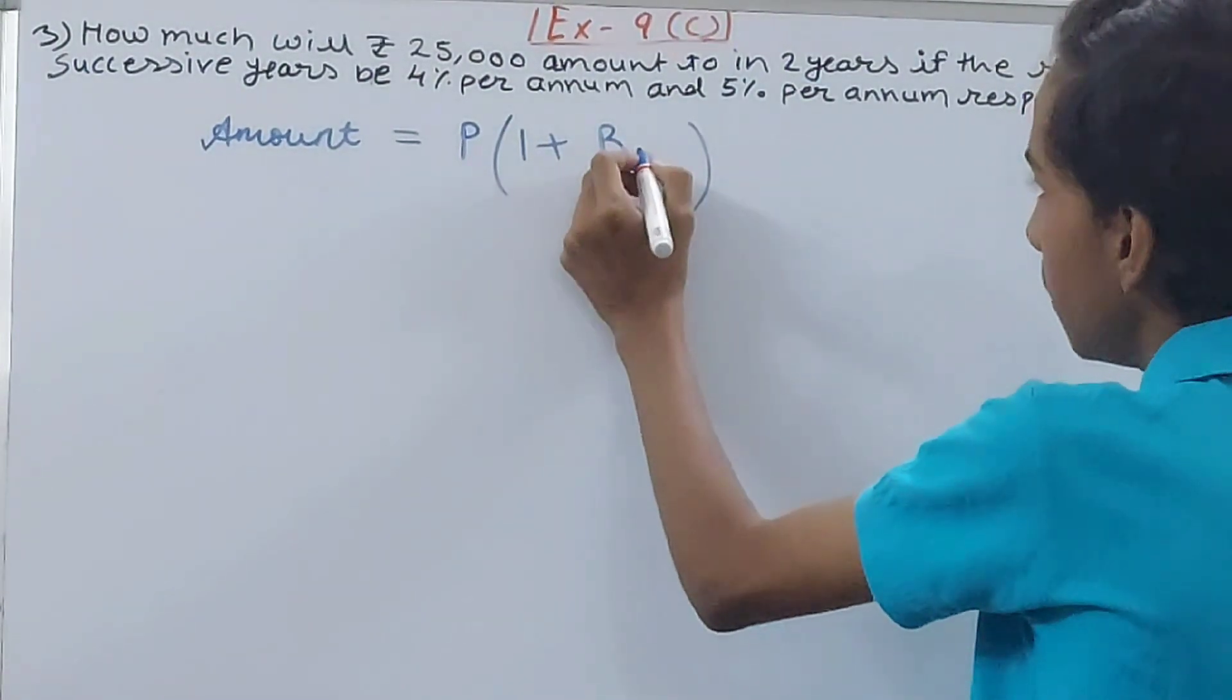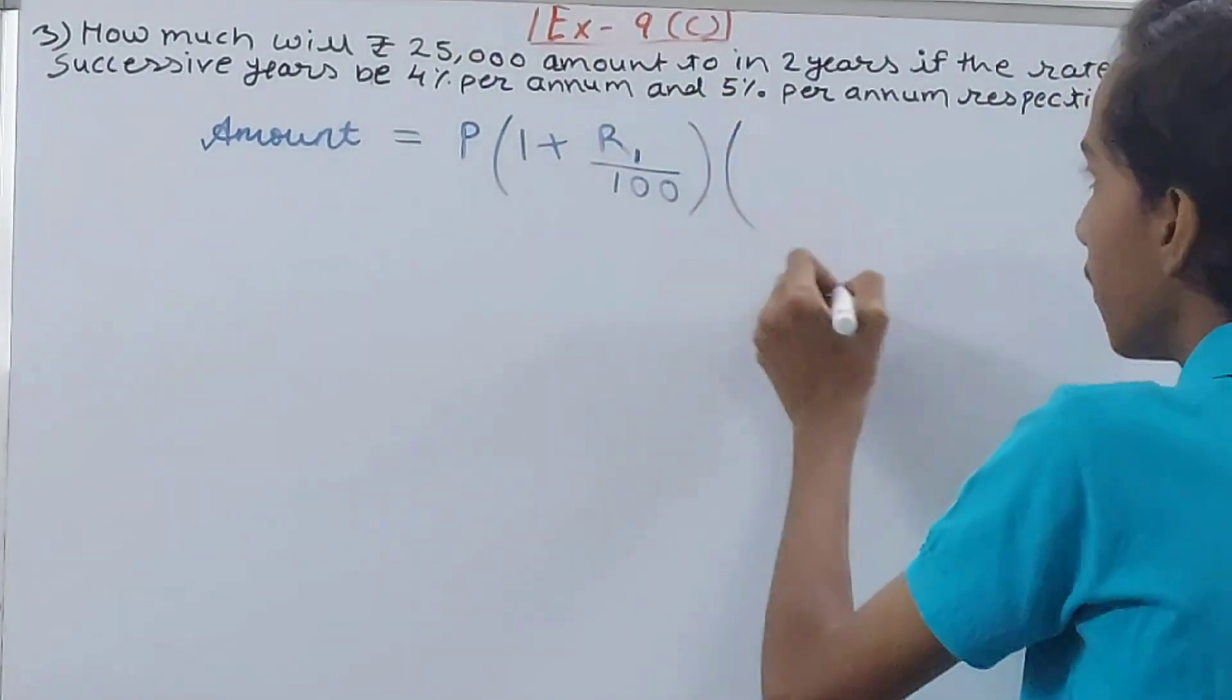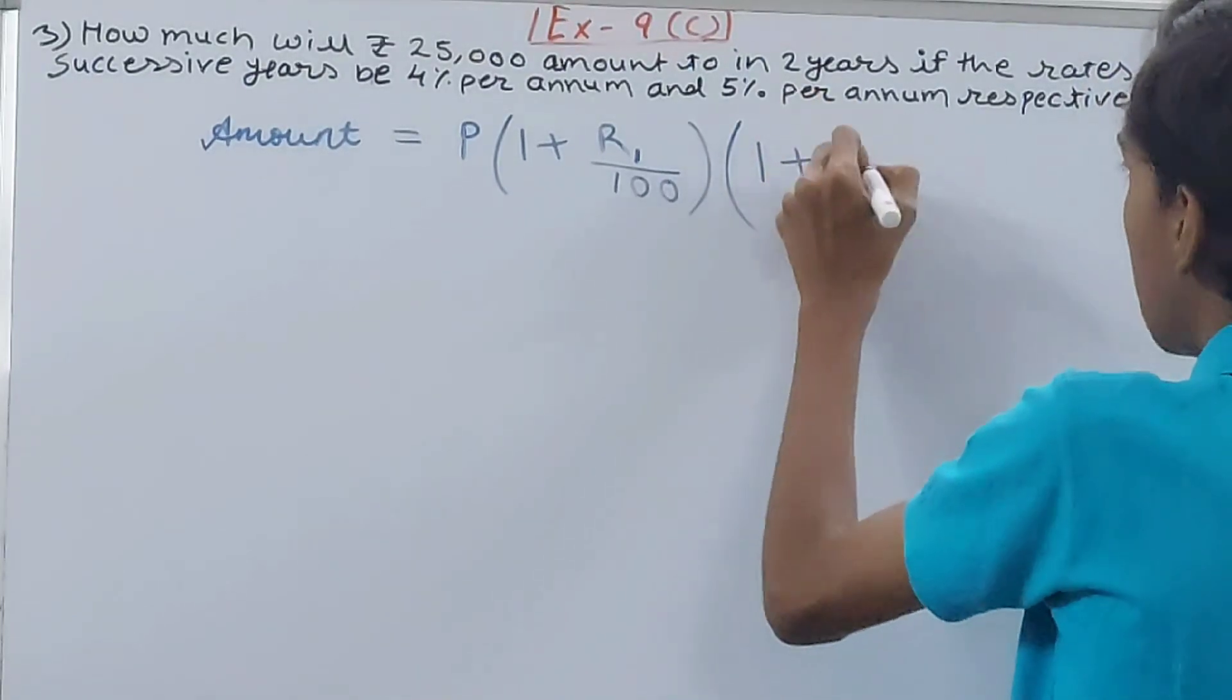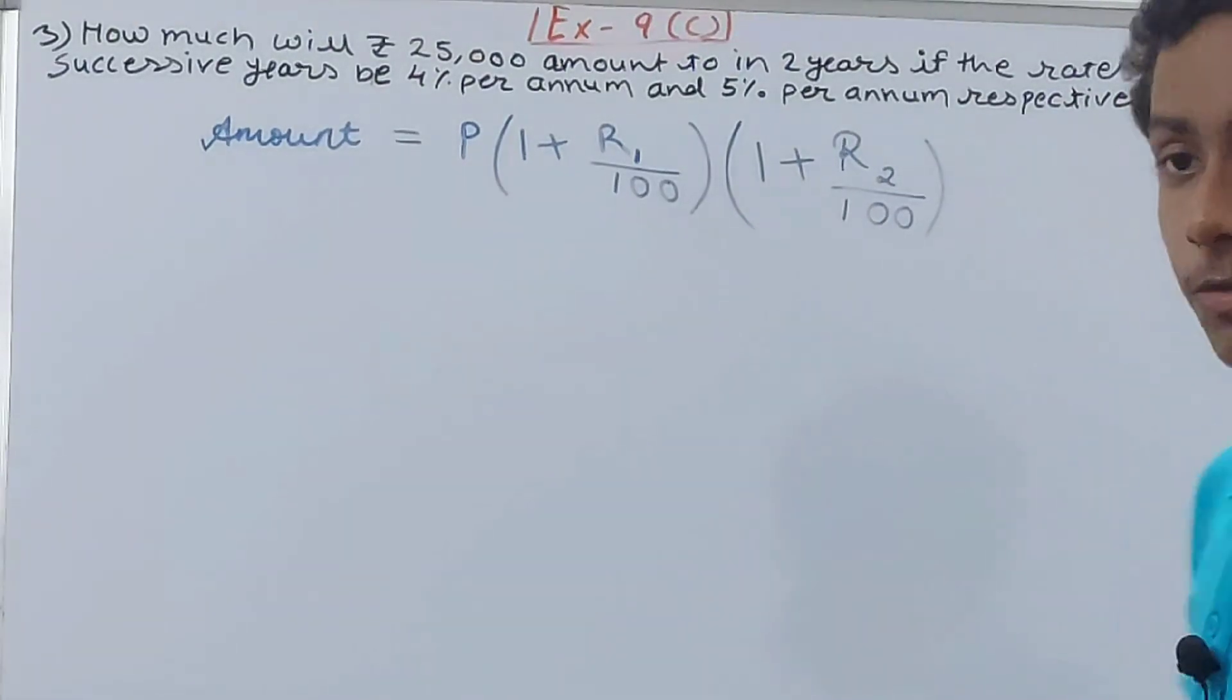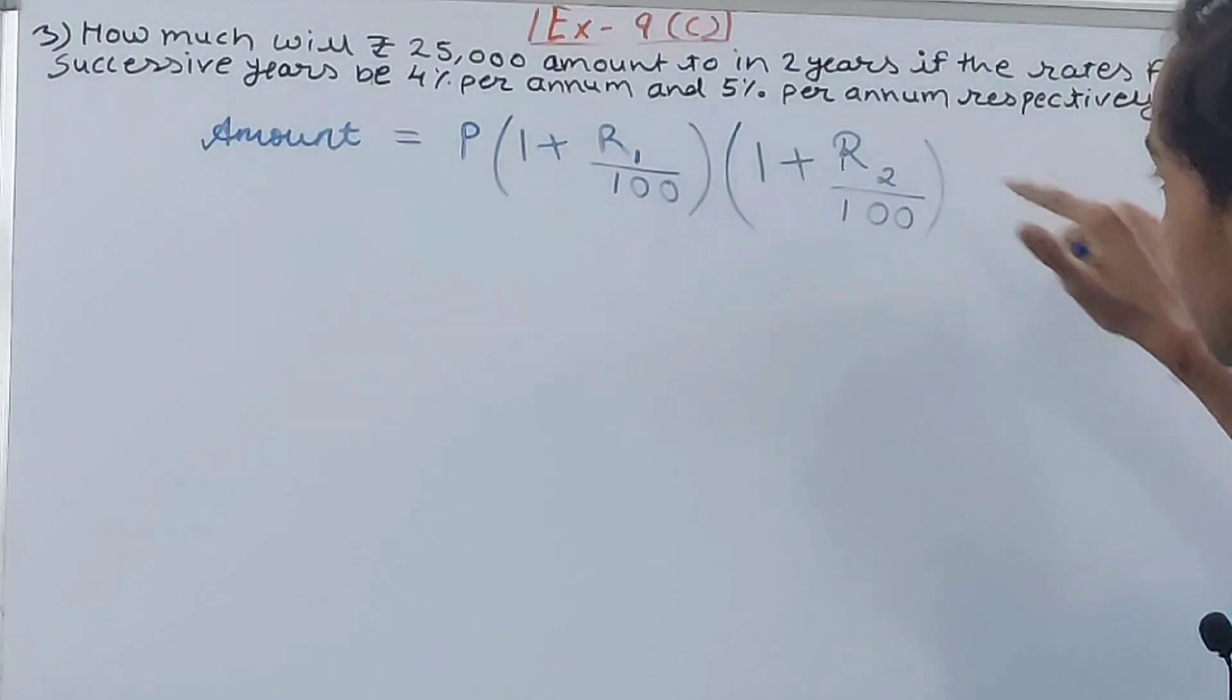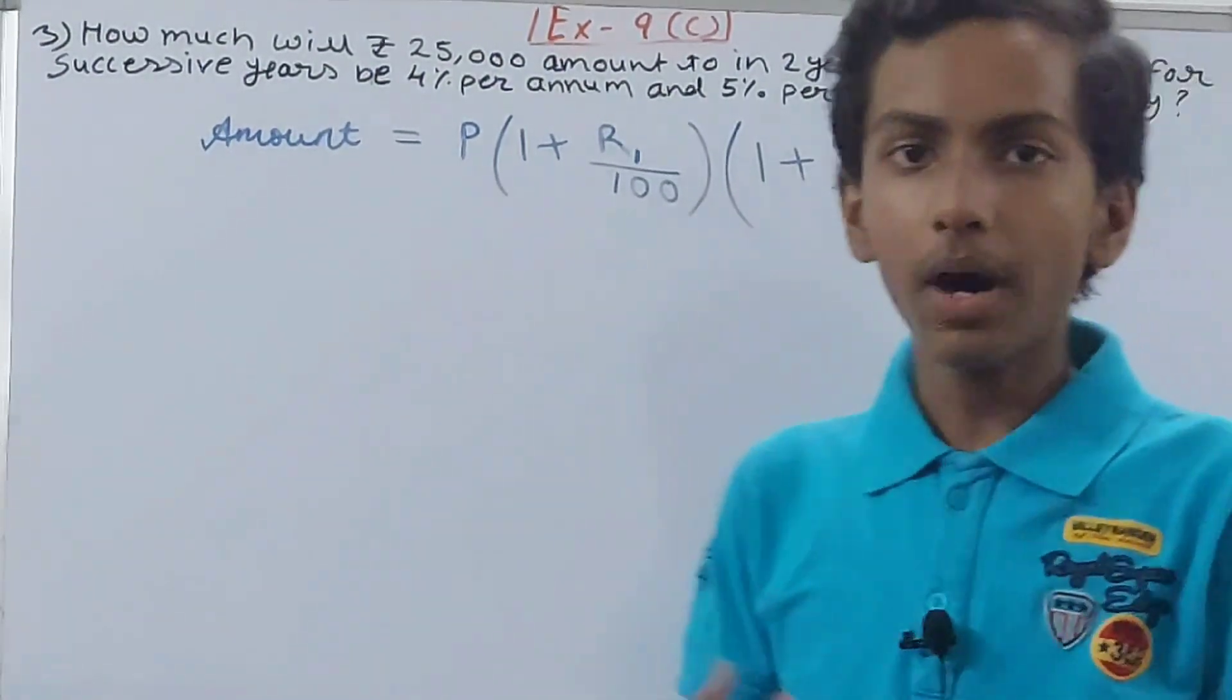difference will be this: we will call it R1, then another bracket we will put, and here also 1 + (this time we will take R2/100), and so on. If it is for three years, then we will put one more bracket and then write 1 + R3/100. Now why am